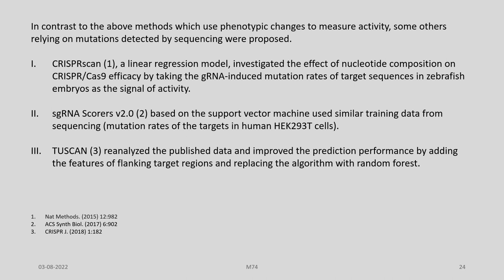In contrast to methods which use phenotypic changes to measure activity, some others relying on mutations detected by sequencing were also proposed. For example, we have CRISPR-Scan, then sgRNA Scorer, and then TASCAN. For full details on these methods, you can refer to articles in Nature Methods, ACS Synthetic Biology, and the CRISPR journal.